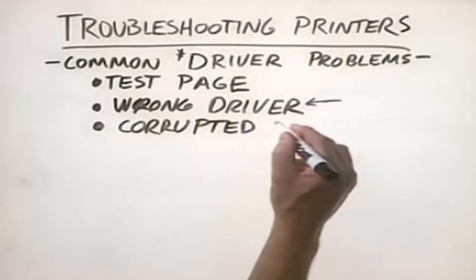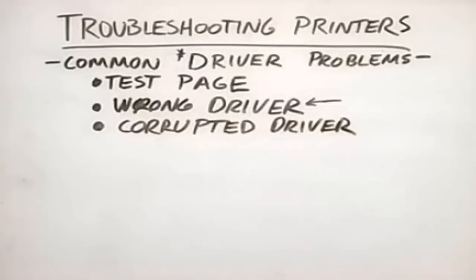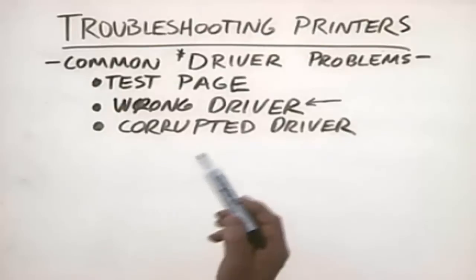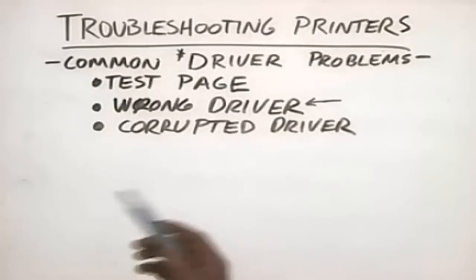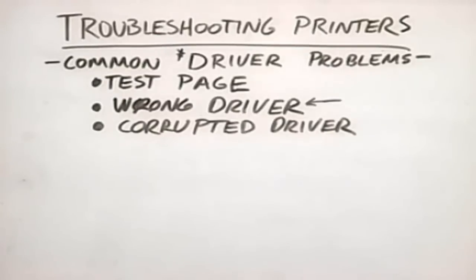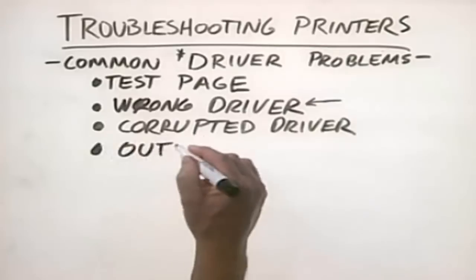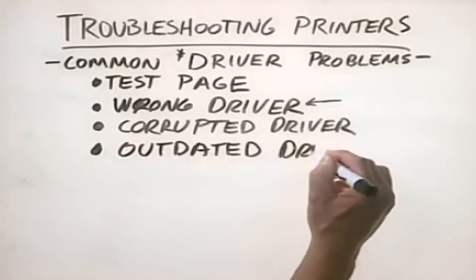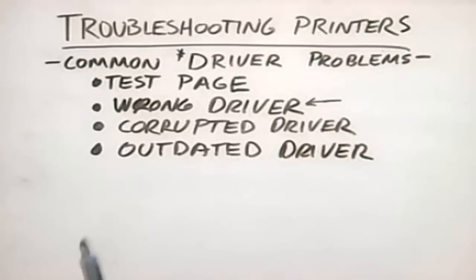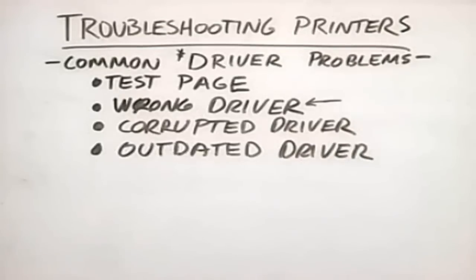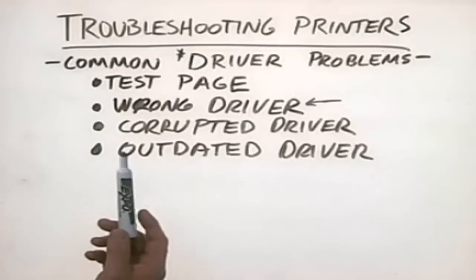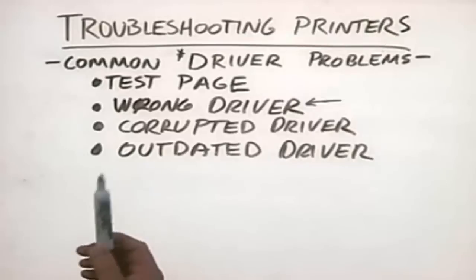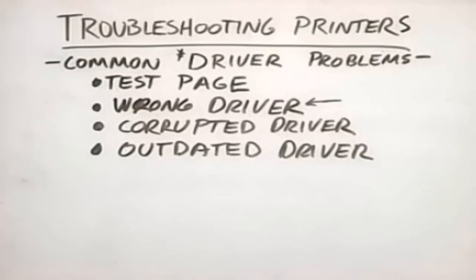Another problem that happens on occasion is a corrupted driver. A driver file for a printer can get corrupted — for example, if a hard disk is developing bad spots on a platter where the printer driver is stored, or if a power surge causes stray data to be written to the hard drive. Finally, there's the outdated driver. Go to your printer manufacturer's website, see what drivers are currently available, and compare them with the version you're currently using. If the version on the website is newer, download and install it — it might fix some of the problems you're having.